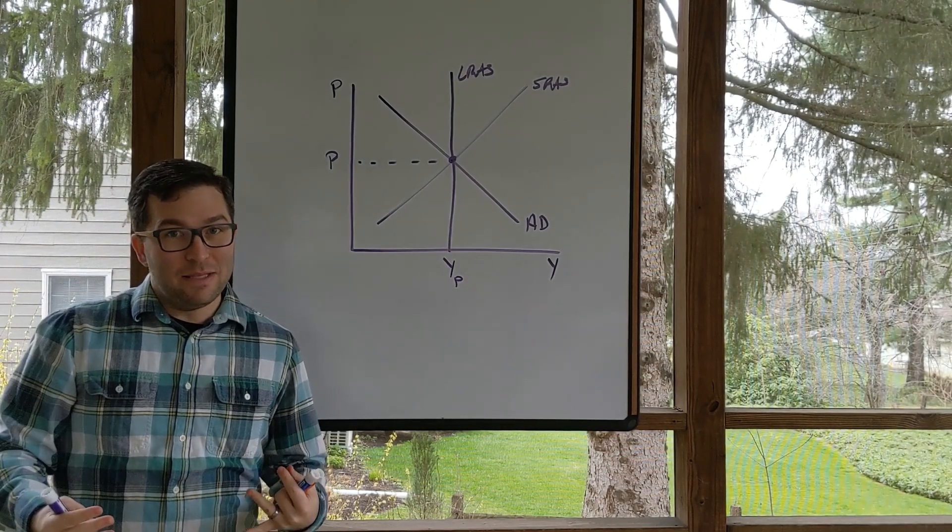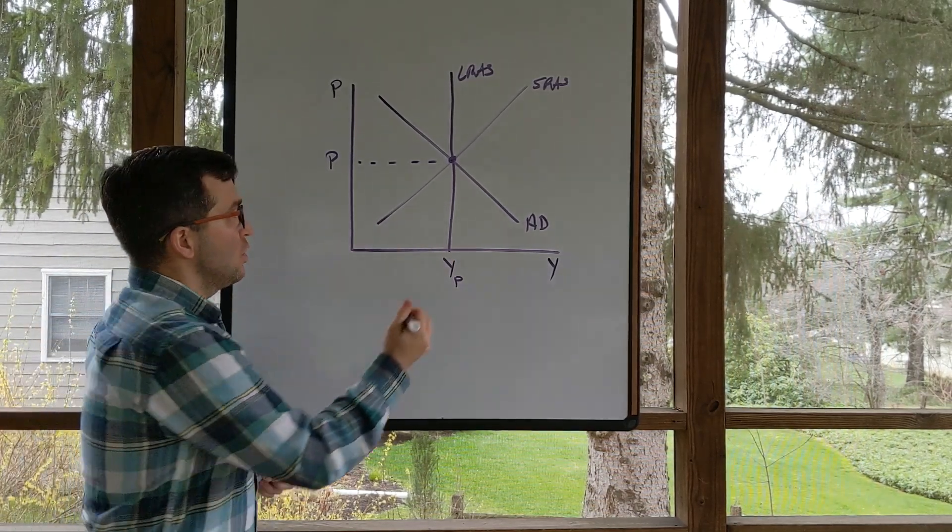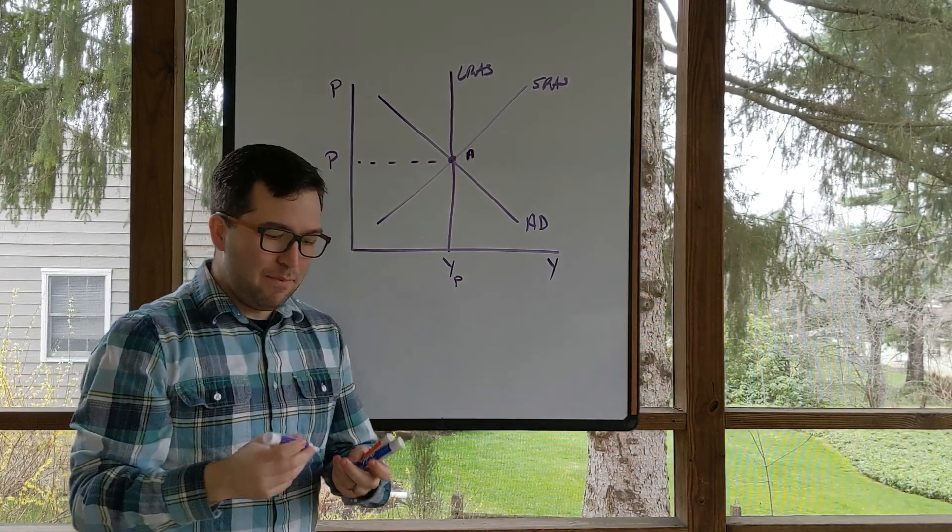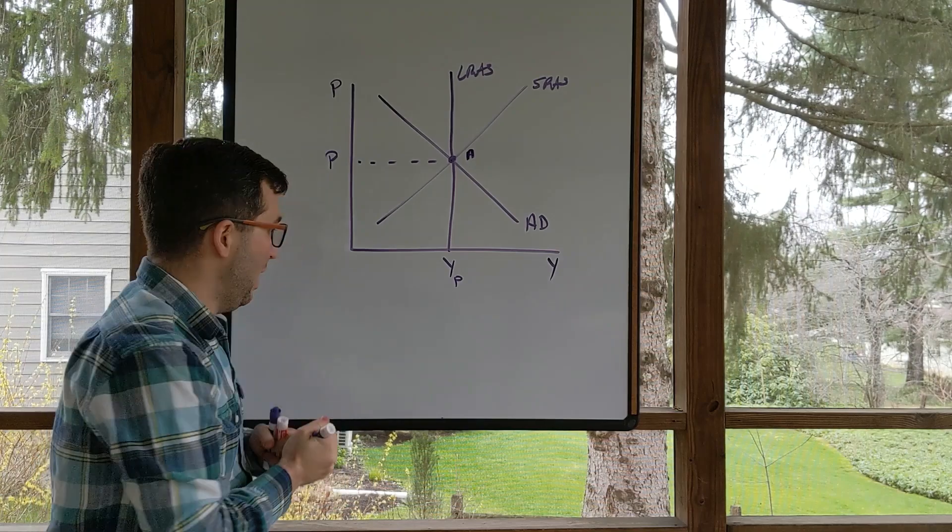Let's explore what happens when we move out of this long run equilibrium. So let's say we start at point A. And for this example, let's say there's a decrease in aggregate demand.